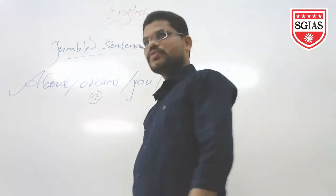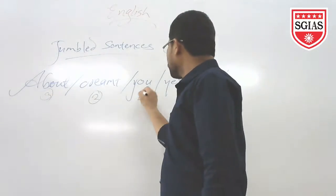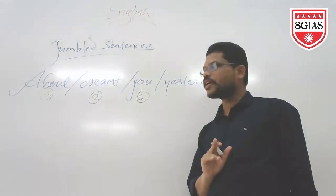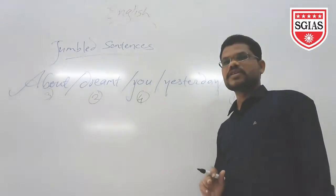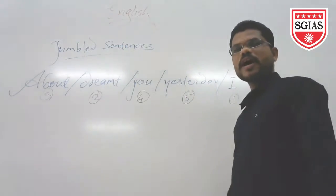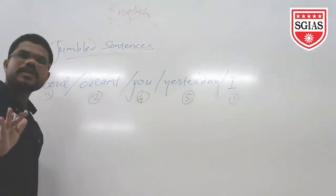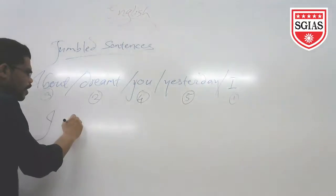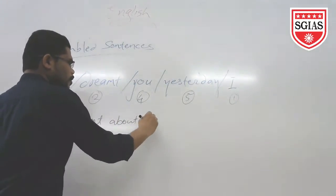The verb can be 'drink.' After the verb, the next step is to find your object — 'about you' can be included in your object. Whatever is left is your adverbial adjunct. Hence, the logical sequence of this given sentence would be: 'I dreamed about you yesterday.'